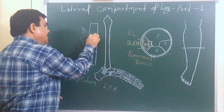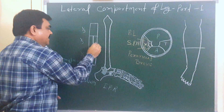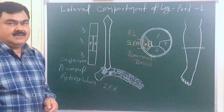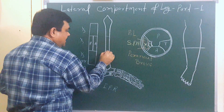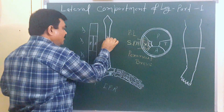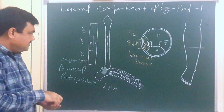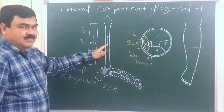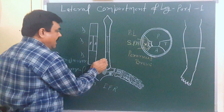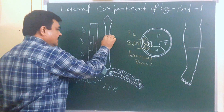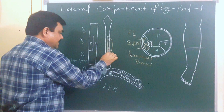The middle one-third is again divided into two parts: an anterior part and a posterior part. The muscle that takes origin from the anterior half of the middle one-third and the whole lower one-third of the lateral surface of the fibula is peroneus brevis.